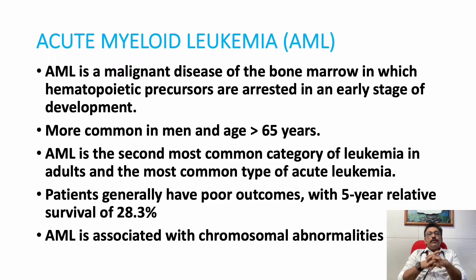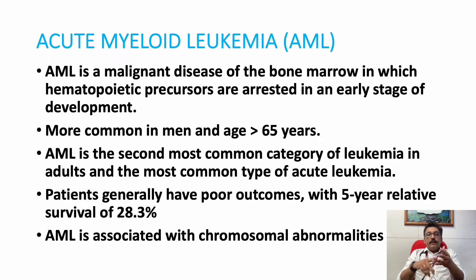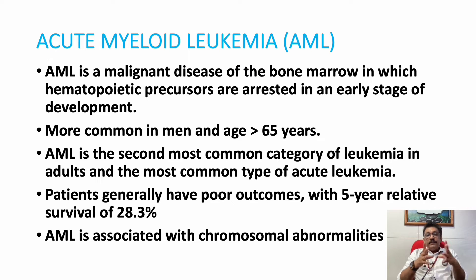AML is mainly a malignant disorder of bone marrow where hemopoietic precursors — immature cells — are produced from the bone marrow. Mature cells are not produced; the bone marrow is full of immature cells, so normal production of WBCs, RBCs, and platelets is all disordered. This disease is commonly seen after age 65.